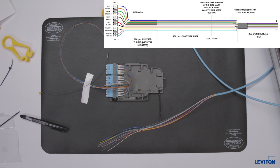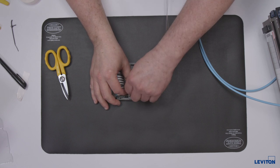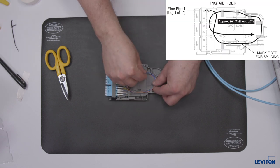The pigtail is designed to allow for both ribbon and single fusion splicing. This will determine the routing and marking steps of the pigtail. If terminating single fibers, cut the fibers before the black tape and ribbonized area of the assembly.